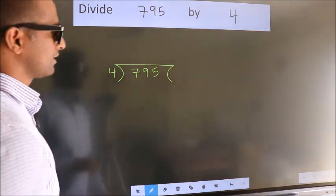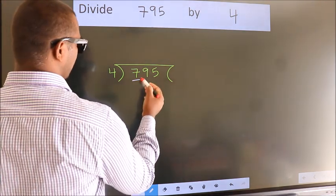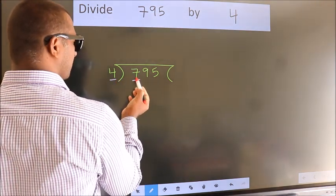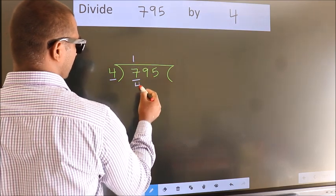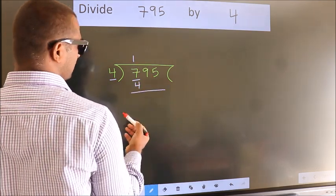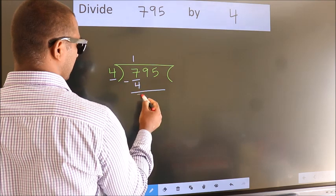Next. Here we have 7, here 4. A number close to 7 in 4 table is 4 ones 4. Now, we should subtract. We get 3.